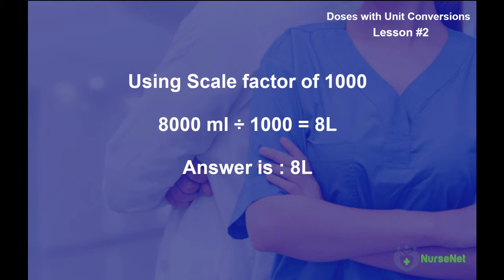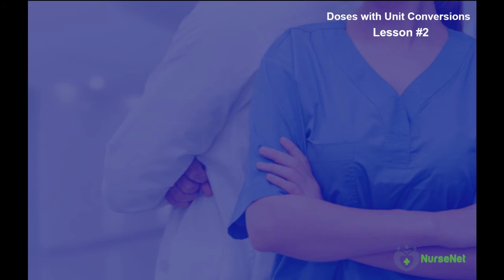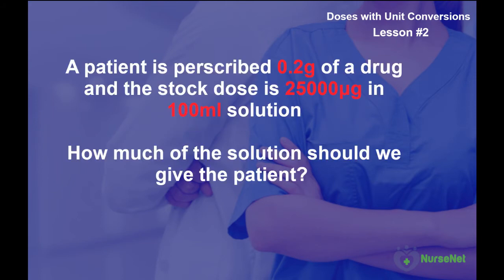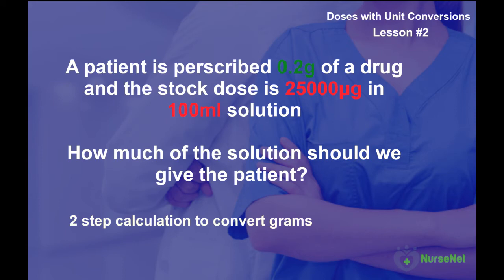Let's do another example together. This time we need to really concentrate on how many steps we need to make the correct conversion. A patient is prescribed 0.2 grams of a drug and the stock dose is 25,000 micrograms in a 100 milliliter solution. How much of the solution should we give the patient? The first thing we should notice is that we're going to need a two-step conversion process to get grams into micrograms.